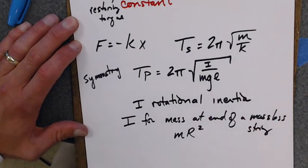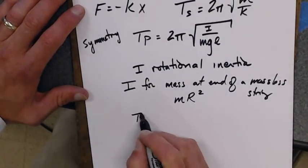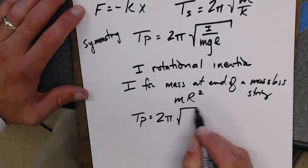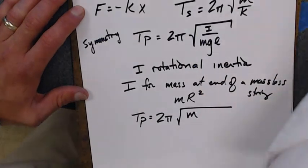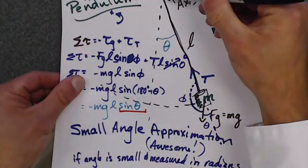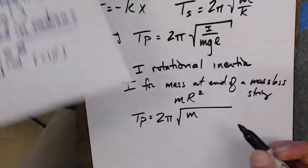So now, let's plug this into there. So what am I going to get? I'm going to get the period of the pendulum is 2 pi root mass of my object, r. What r? In this case, r is how long the pendulum is. It's the length of my pendulum. So l squared.